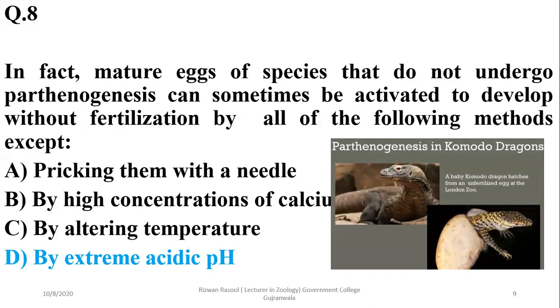The only vertebrates which have been observed having parthenogenesis are the Komodo dragons. Otherwise, parthenogenesis is observed in certain types of insects, but it is uncommon in vertebrates.